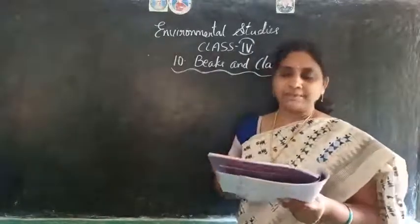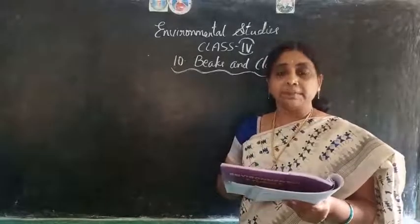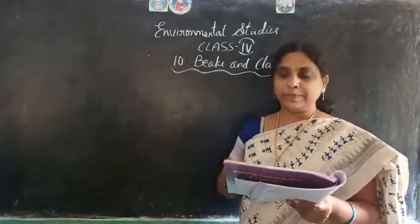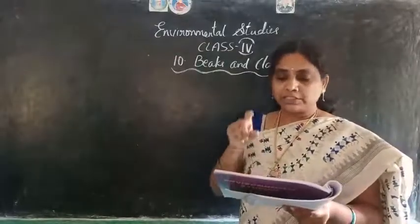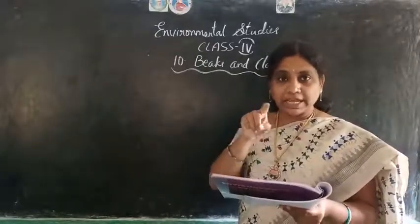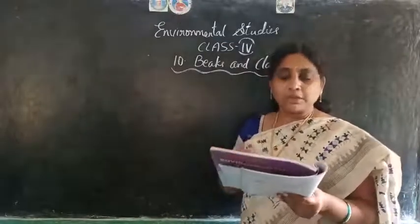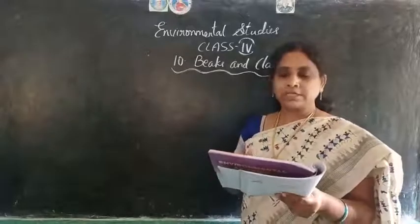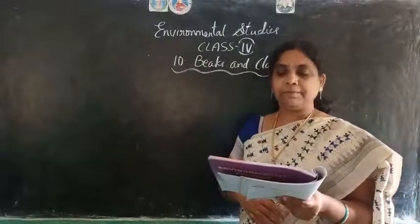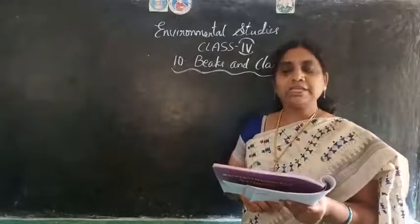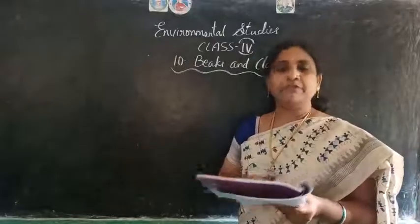The next type is the hooker beak. Hawks, owls, eagles and vultures, which catch and kill their prey, have sharp hooker beaks. These are used to bite and tear the prey into pieces small enough to swallow — they cut them into small pieces to eat.